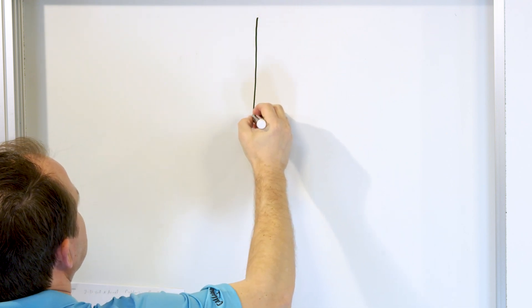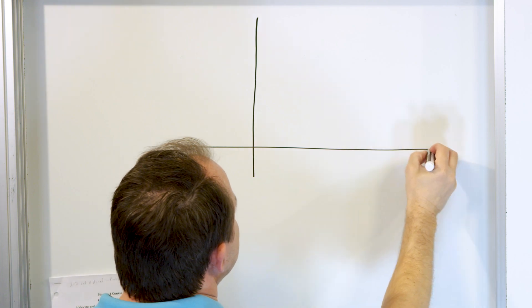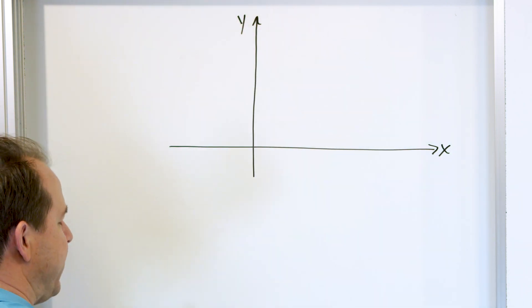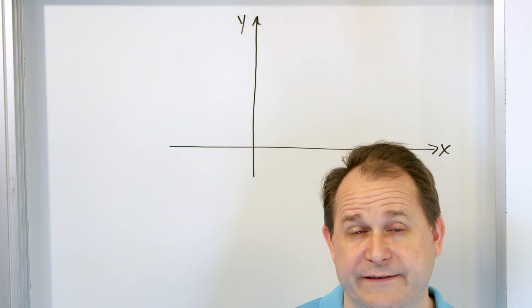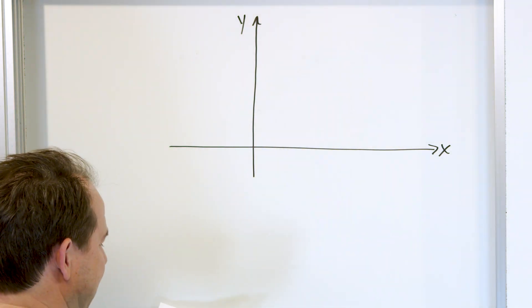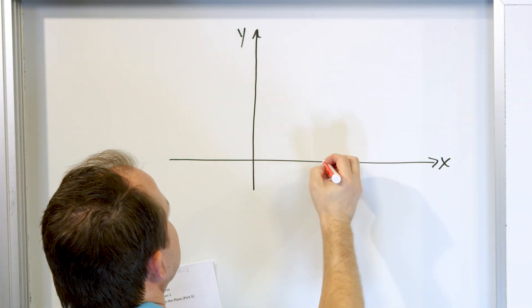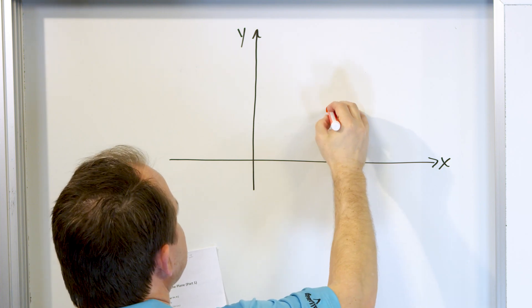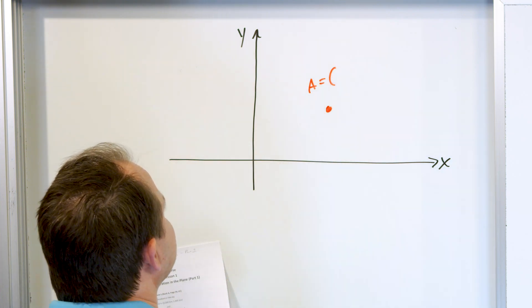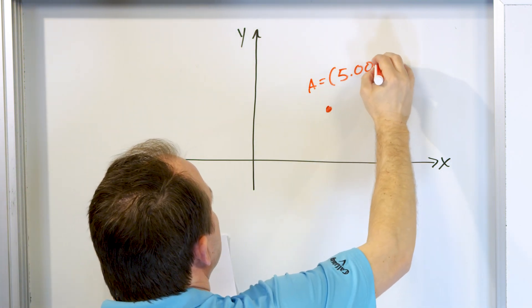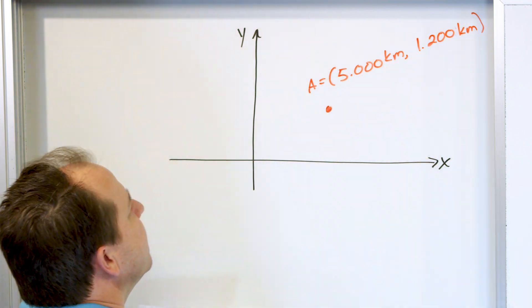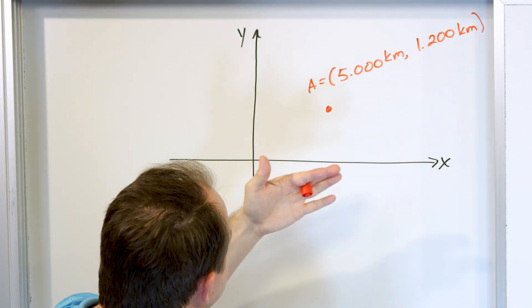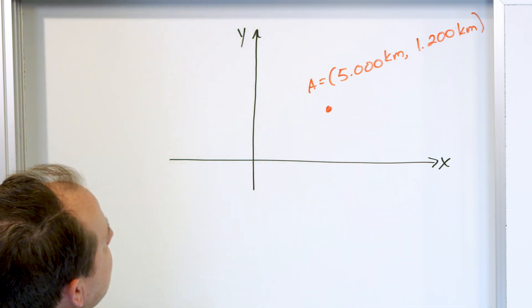The first thing we need to do is draw a picture. So if we have an x-y coordinate system — and you don't have to be a master artist — you do need to get in the habit of drawing a picture, even a simple little sketch for a simple problem. Initially the meteor is spotted at 5, 1.2 — we'll call this point A. The coordinates of point A are 5.000 kilometers, 1.200 kilometers. We need two numbers as an x-y coordinate pair to specify the initial position of the meteor.